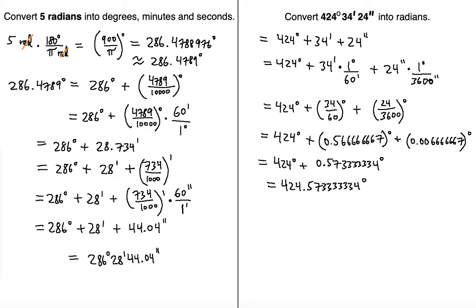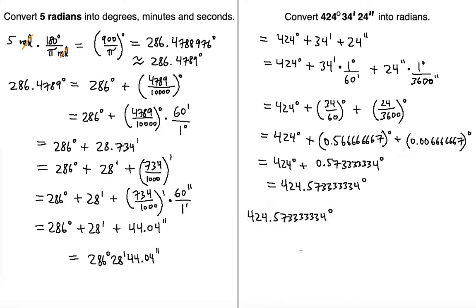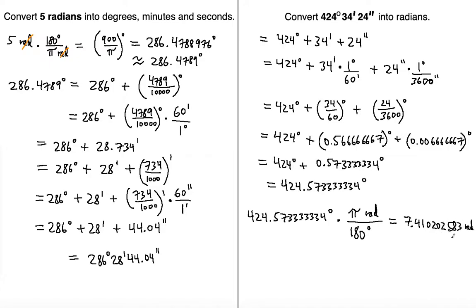Now we take that result and multiply it by the conversion factor: pi radians per 180 degrees. The degrees cancel and the radians remain. The calculator gives 7.410202583 radians, which rounded to the nearest hundredth gives 7.41 radians.